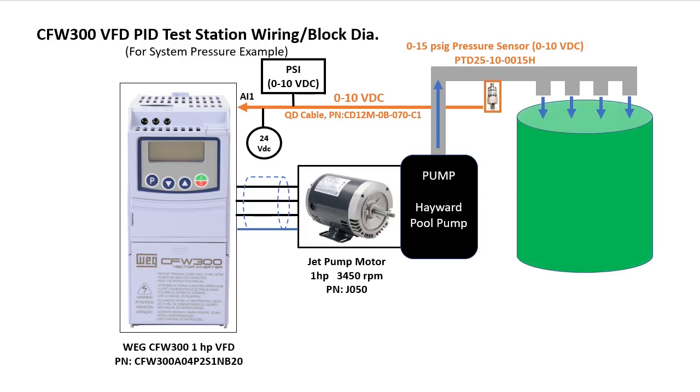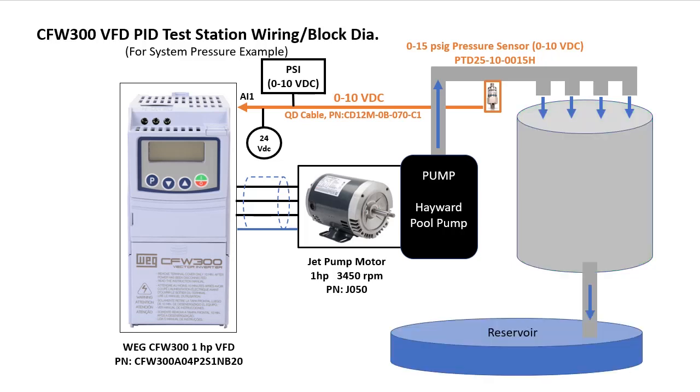The water is collected in a 55 gallon drum and drains to a reservoir. The intake to the pump has a check valve to keep the water from draining out when the pump is not running.